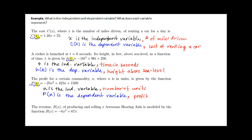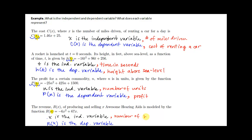Looking at the last example, the revenue r of x for producing and selling x awesome hearing aids is modeled by the function r of x equals negative 6x squared plus 67x. We can see that x is the independent variable and r of x is the dependent variable. x is the number of awesome hearing aids, and r of x is the revenue.